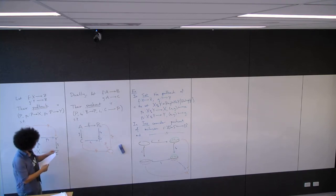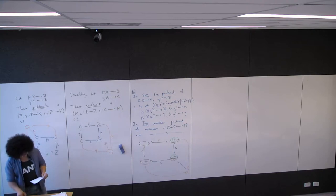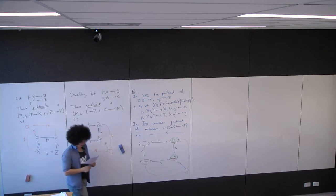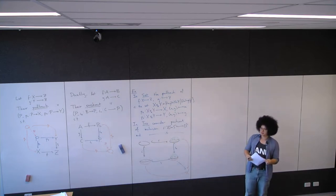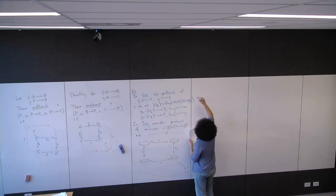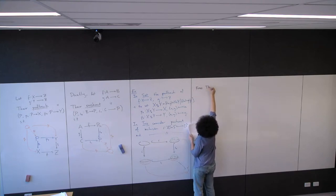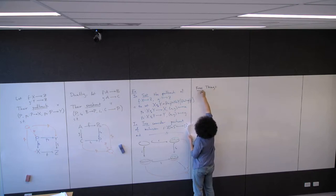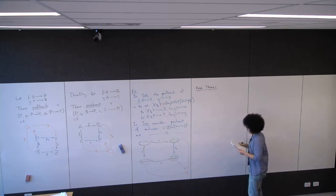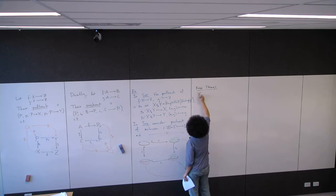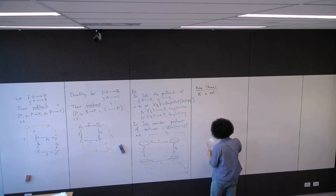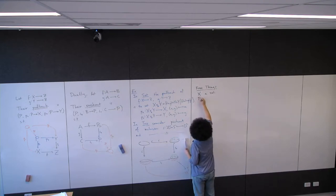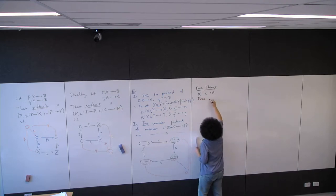Now we're going to switch gears a little and talk about some universal properties that feel a bit different from the ones we've been talking about. We're going to talk about three things. Let X be a set. The free monoid on X.